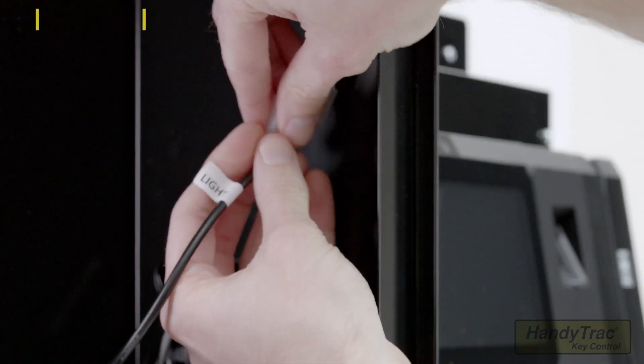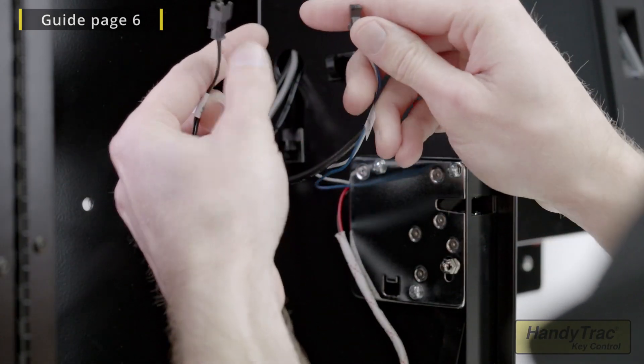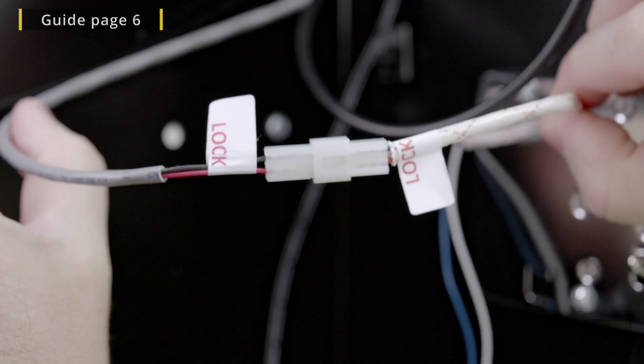Next, connect the three cables marked light, lock and switch. Before you continue, make sure you have connected each of the cables correctly.